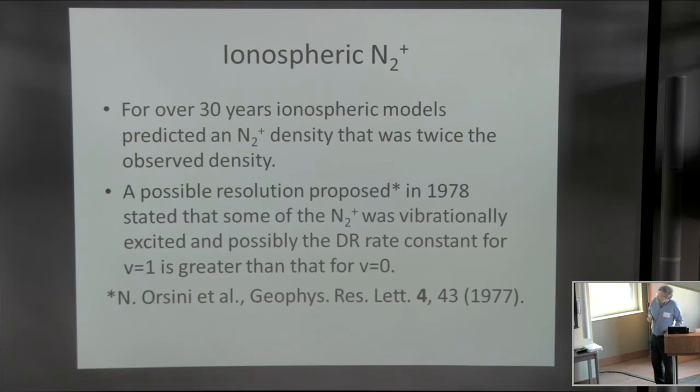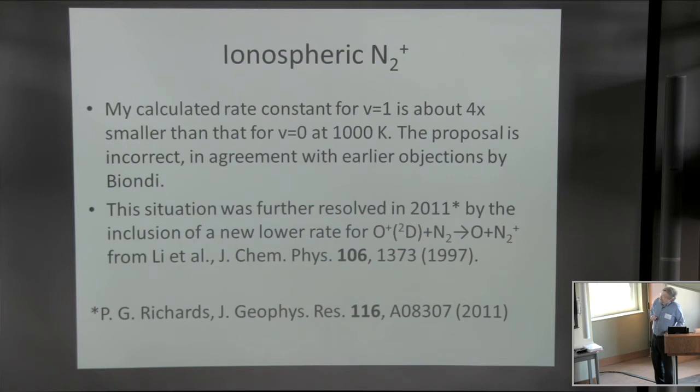At the time, Fred Biondi published some objections to this proposal, and those are supported by the calculations. The situation was not resolved until last year when Richards published a paper that included a new rate coefficient for a reaction that generates N2+, namely the O+ + N2 reaction going to O + N2+. That lower rate coefficient led to less N2+ in the models, and now there's agreement between the calculated and the observed N2+ density.